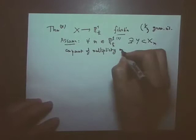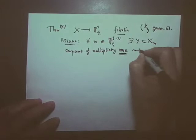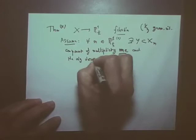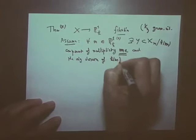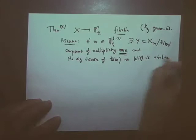And moreover, the algebraic closure, so this fiber is defined over the field K of M, which is a finite extension of K, the residue field at M. And the algebraic closure of K of M in the function field of Y is abelian. It's called the abelian splitting condition.